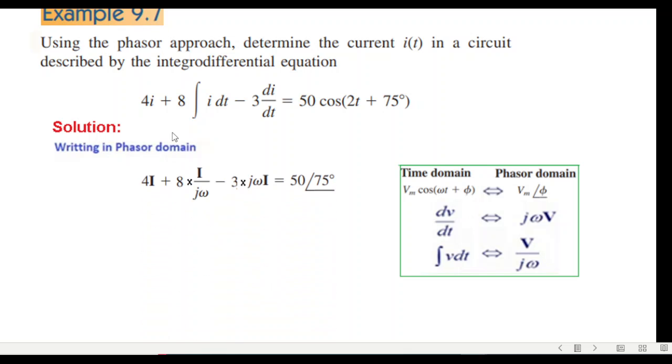After conversion the equation becomes: 4I phasor plus 8 times I over j omega minus 3 j omega I equals 50 angle 75 degrees. I can take I common.